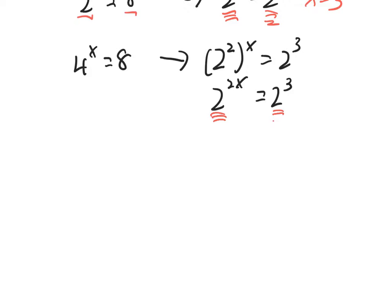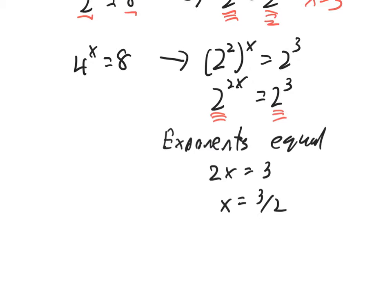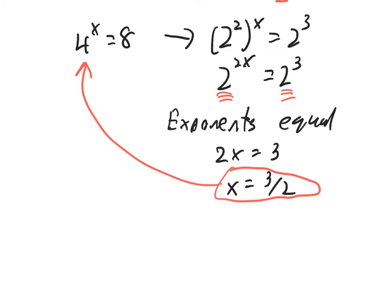Therefore, exponents are equal. And we're going to get 2x is equal to 3, which means x is 3 over 2. And just like with any equation, if you want to, and even using a calculator, go ahead and take this value, put it back into the original equation and see if it works.